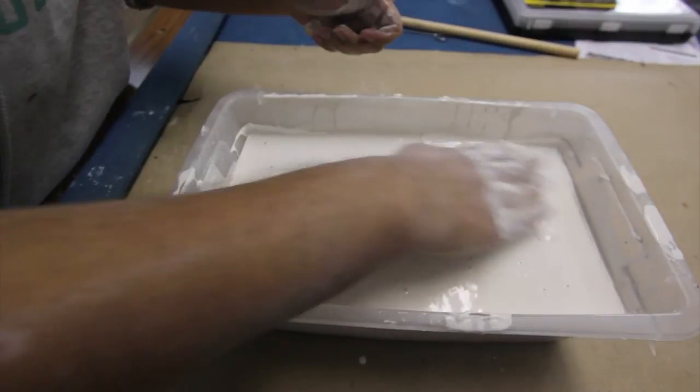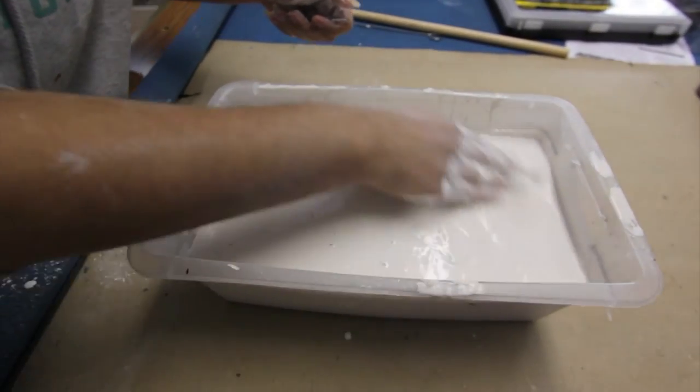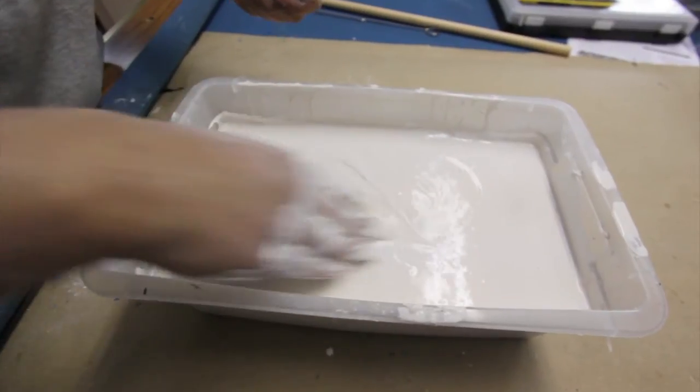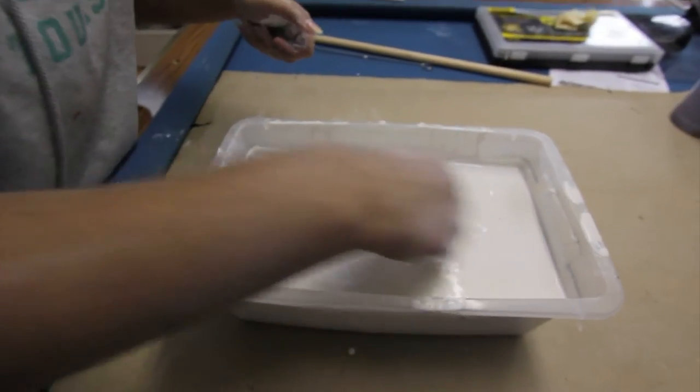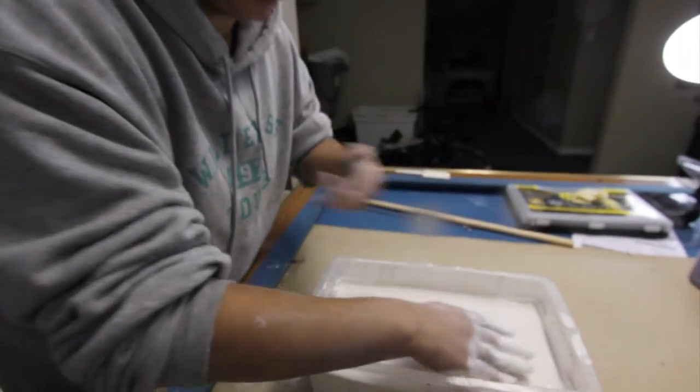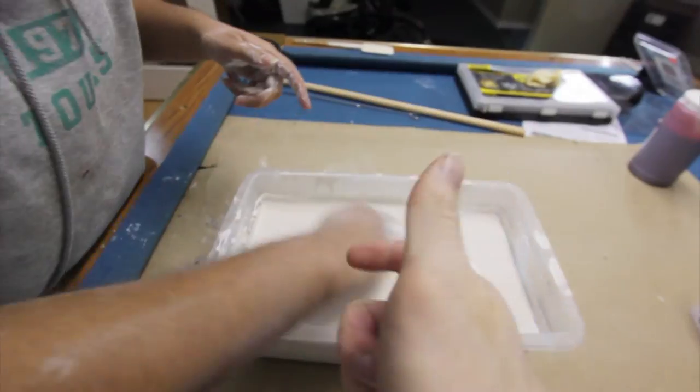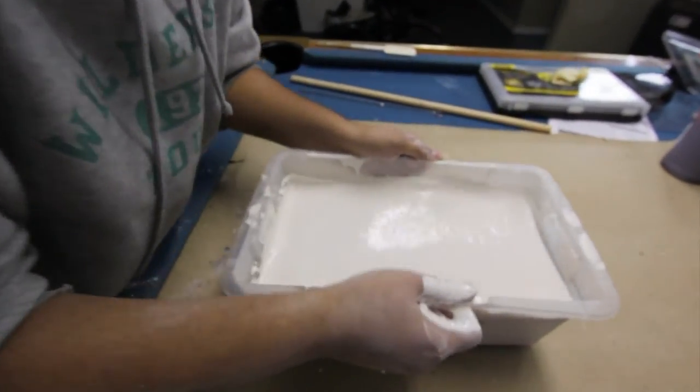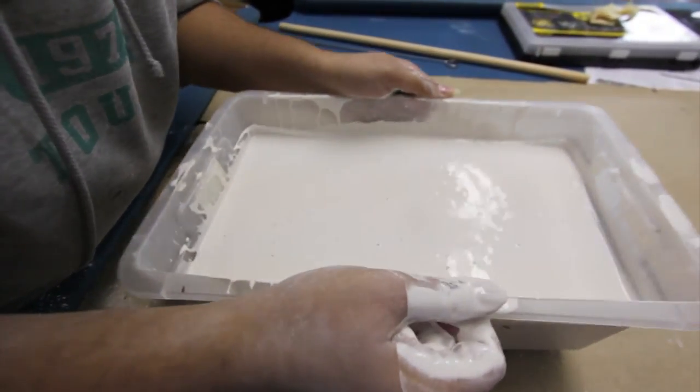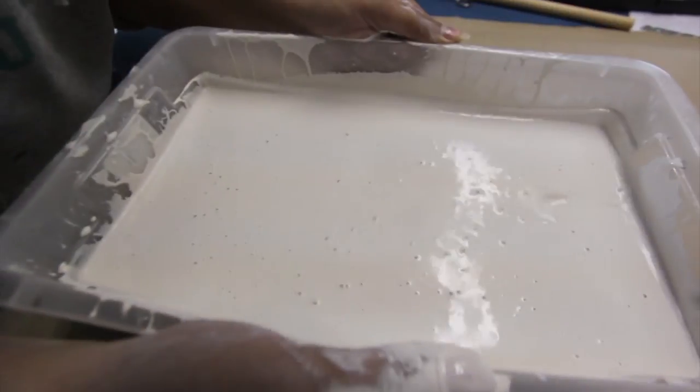I'm just running my fingers over it, popping all those bubbles quickly. The other thing you can do is take a spray bottle and quickly spritz it with water. That'll also pop bubbles. You can see them coming to the top.